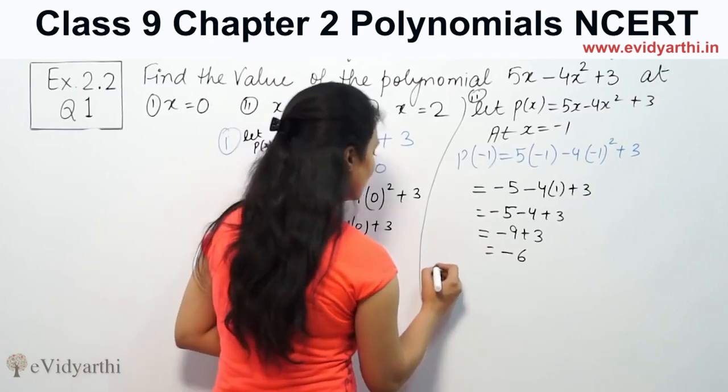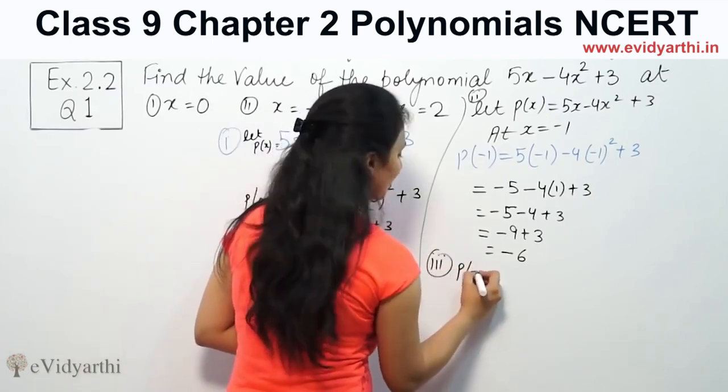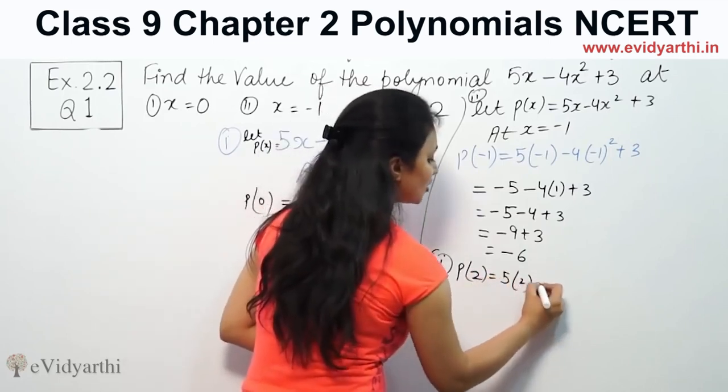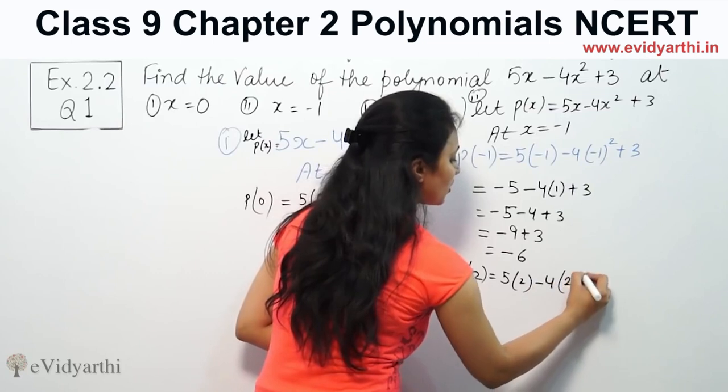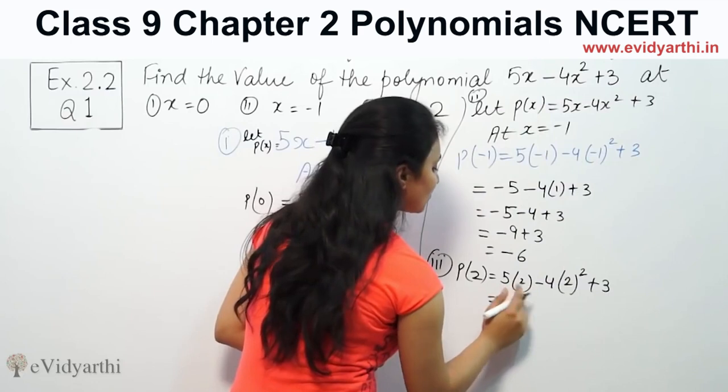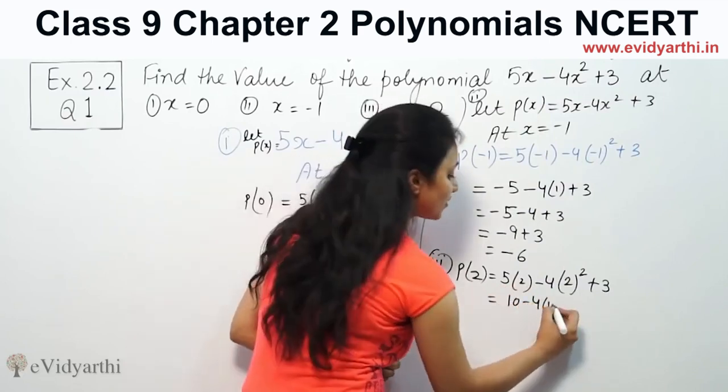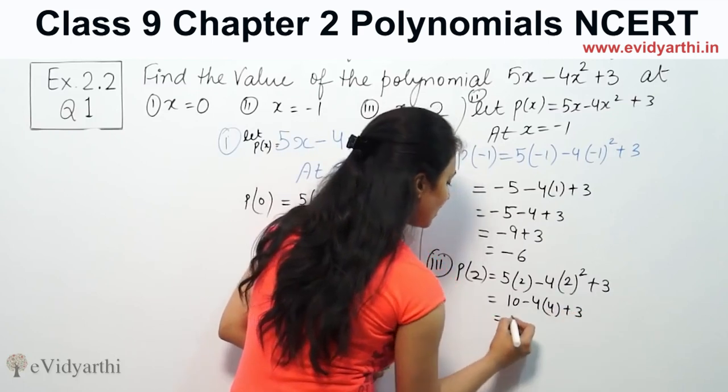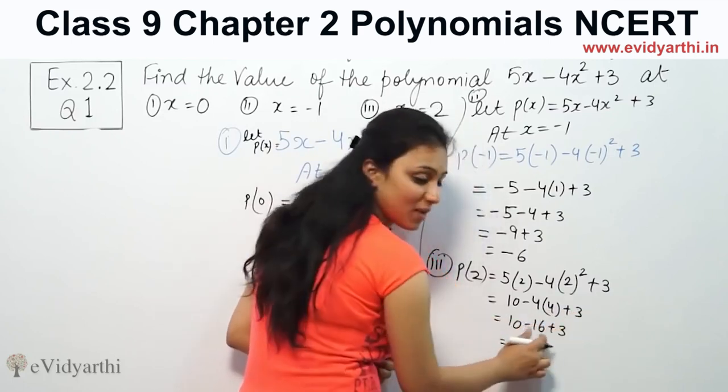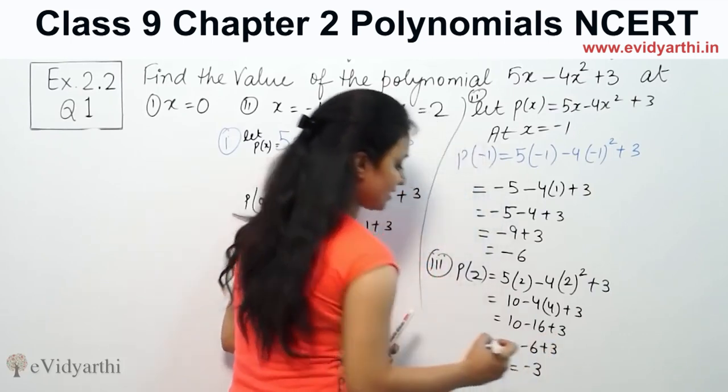Same way for the third part, we are going to find p(x) at x equal to 2. So 5(2) minus 4(2)² plus 3. 10 minus 16 plus 3, which is minus 6 plus 3, equals minus 3.